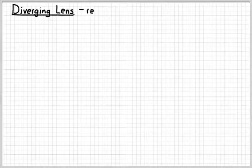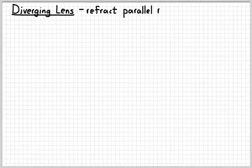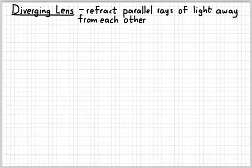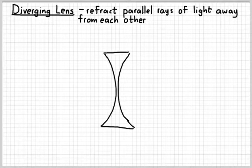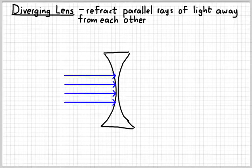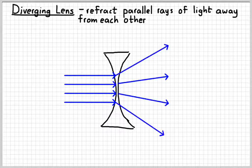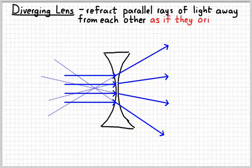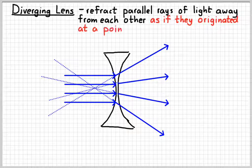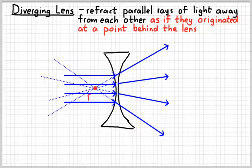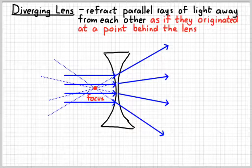A diverging lens kind of works the opposite way. It refracts parallel rays of light away from each other. And so a picture may look like this. Diverging lenses are thinner in the middle, typically. Parallel rays of light come in, and they diverge outward like that, as if they all came from that spot in the middle. And again, you might call that spot the focus, kind of like a convex mirror.